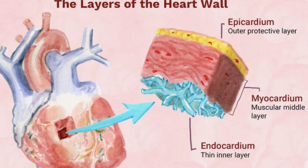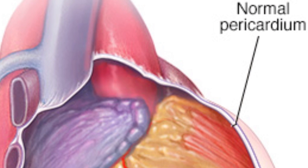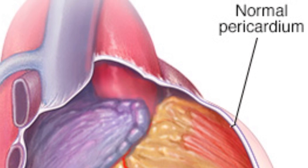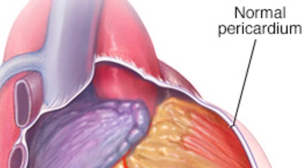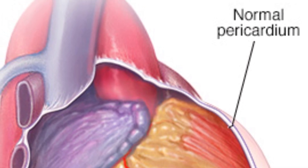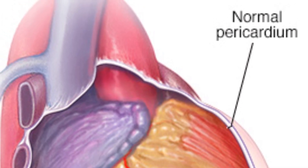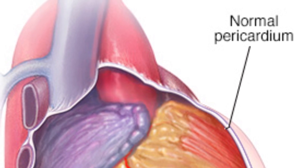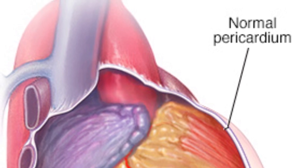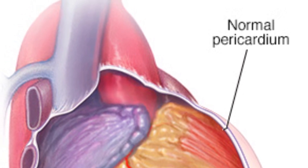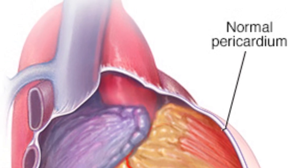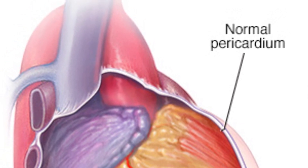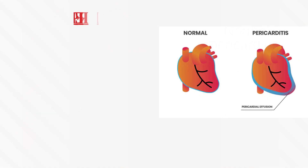The inner layer is the endocardium. A sac-like tissue surrounding the heart is called the pericardium. The pericardium is the thin, two-layer, fluid-filled sac that covers the outer surface of the heart.